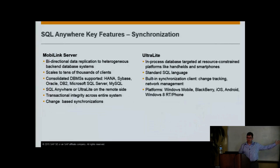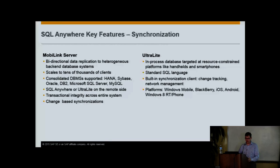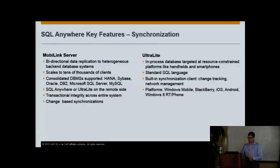In addition to the SQL Anywhere database server, we have something called MobileLink — an important piece of technology that replicates data from SQL Anywhere to a backend database running in a data center. That backend could be HANA, Sybase ASE, Oracle, or other vendors. Ultralight is another database server, closer to SQLite — an in-process database server targeted at the most resource-constrained platforms. SQL Anywhere will run on a phone or Raspberry Pi but needs some number of megabytes; Ultralight can go even smaller.